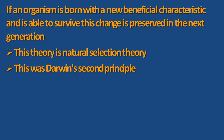To understand Darwin's second principle with an example: in olden times, DDT was used to kill mosquitoes, but later the mosquito population developed a beneficial characteristic to fight back the DDT. This characteristic was preserved and forwarded to the next generation. This is how DDT did not kill the entire mosquito population, because they developed a resistance and passed it on.